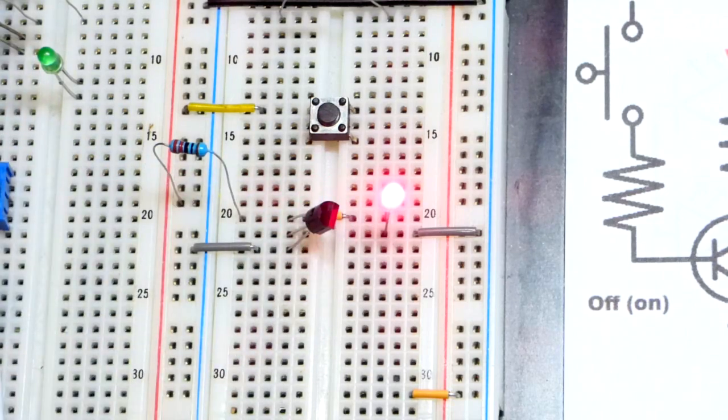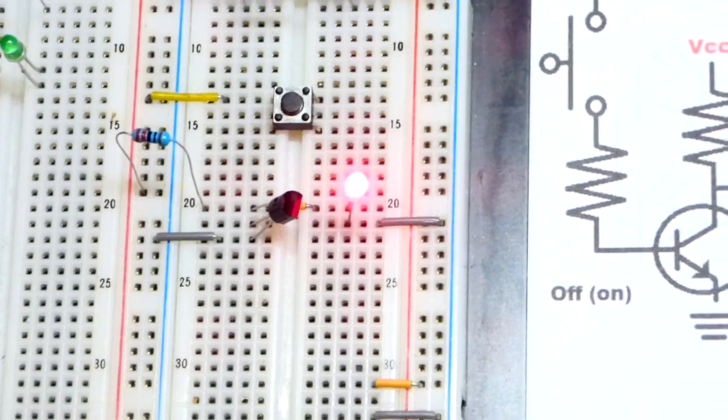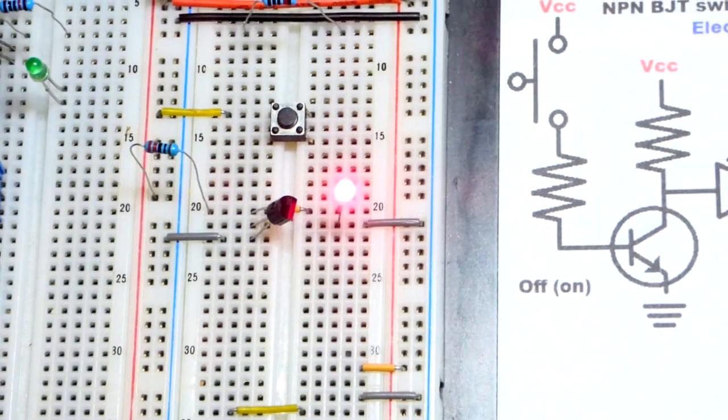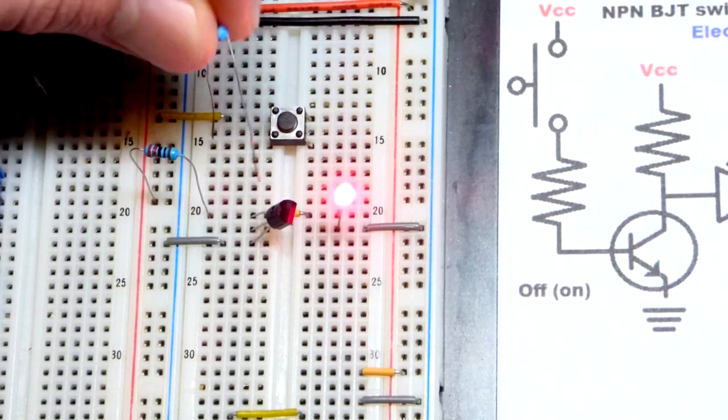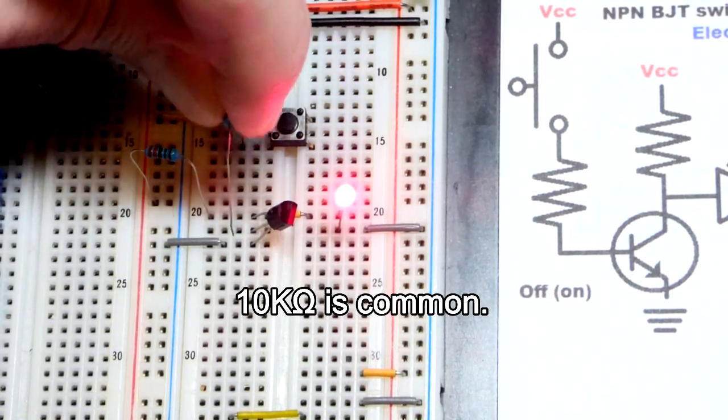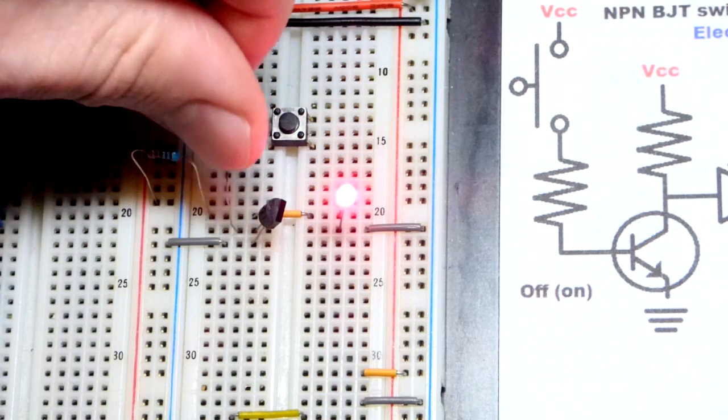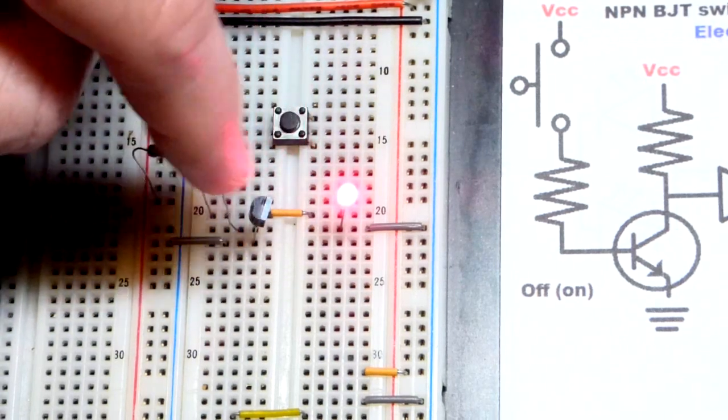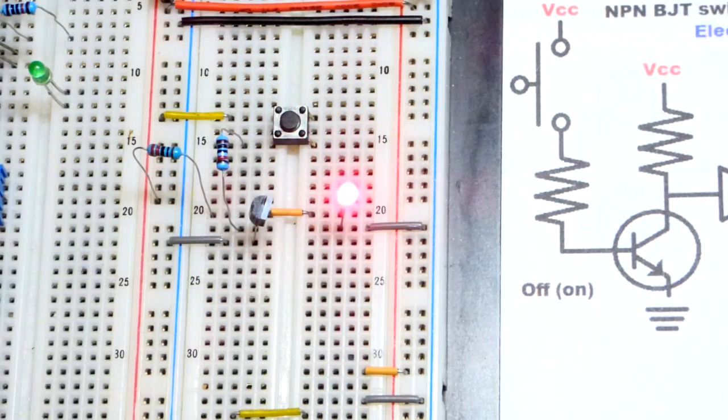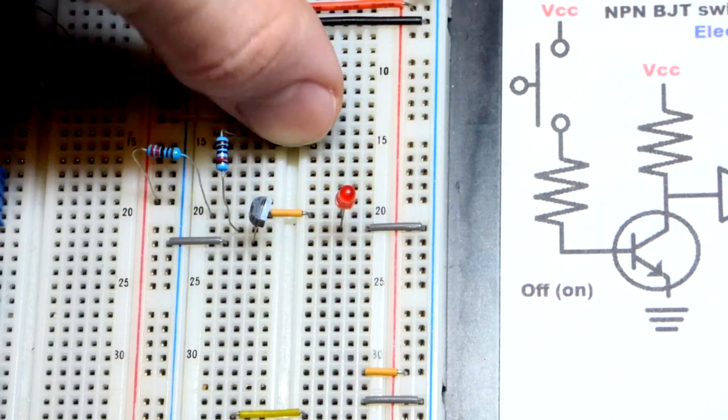We're going to change that by taking the resistor you see there, going to the bottom of the switch, and going to the base of the transistor. Pretty straightforward. So nothing's changed now, transistor's still off, the LED is on. I press the button.